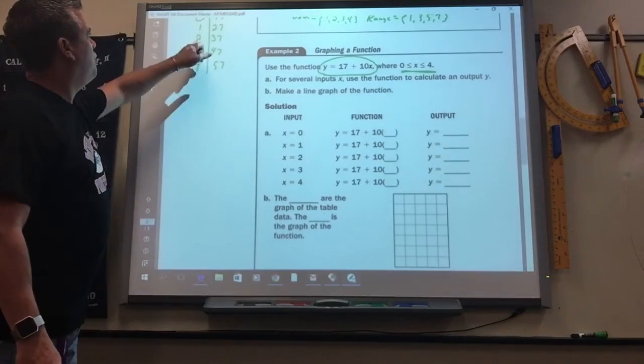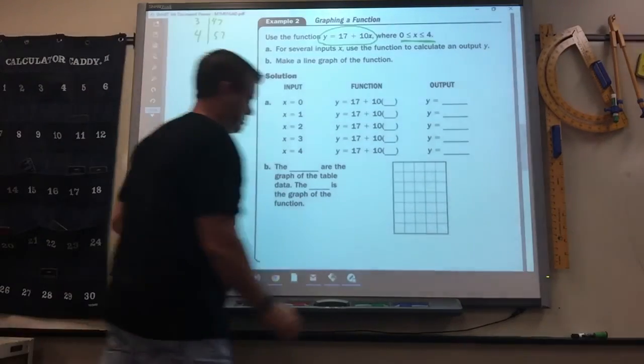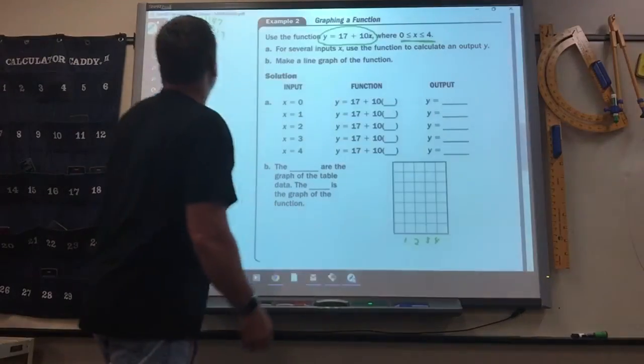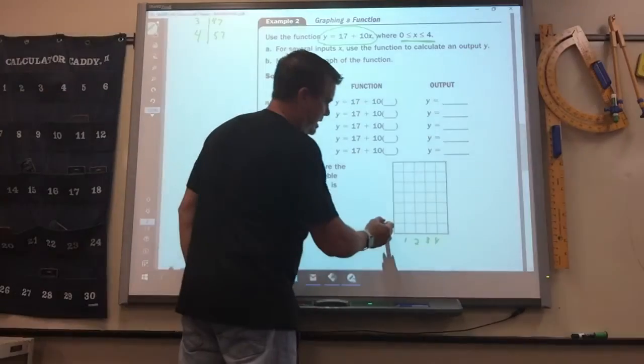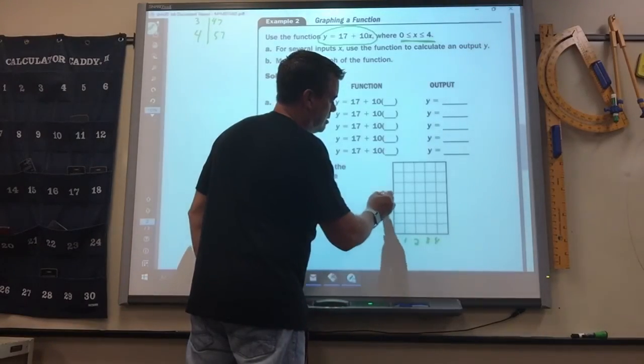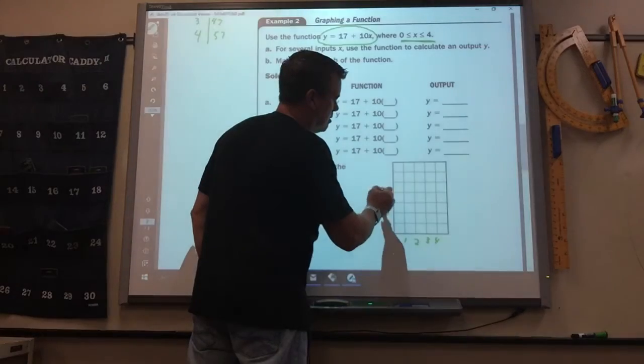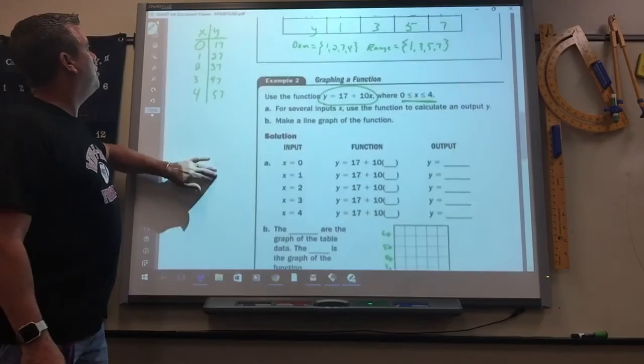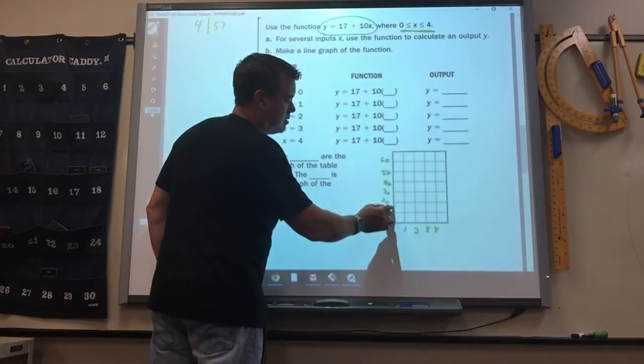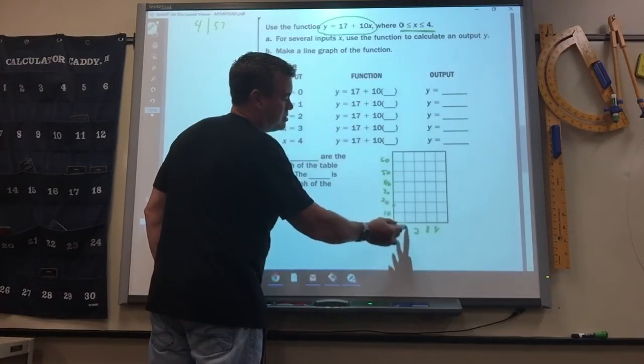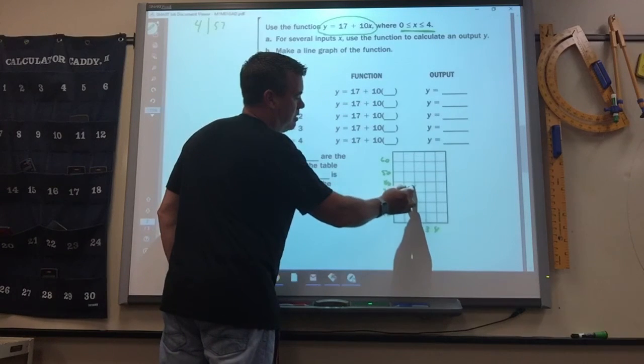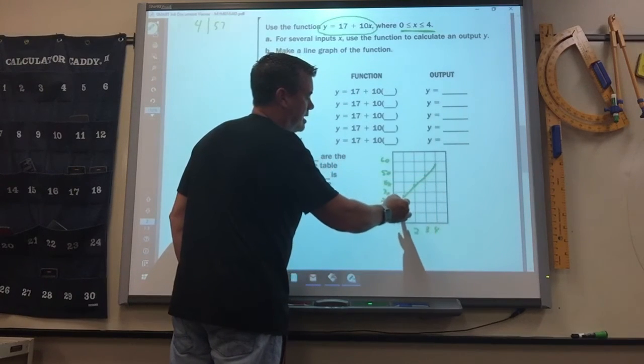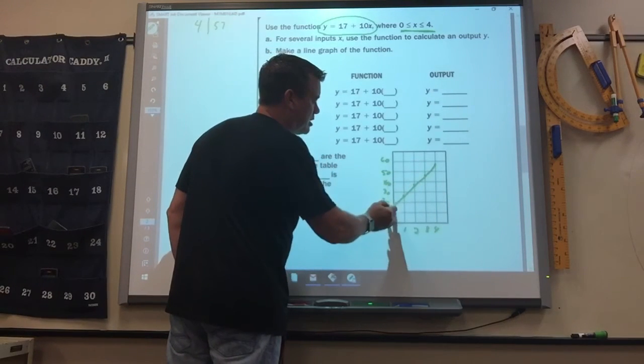So, where they want you to graph that. So since it's got to go up to 57, I'll let it go by tens. And then you just plot each point. 0, 17. You just estimate where 17 is. 2, 27. 3, 37. 47, 57. And then you would just draw it like that. Starts here and starts there.